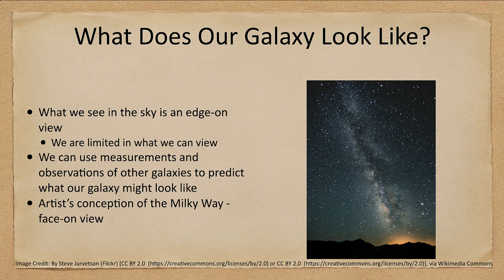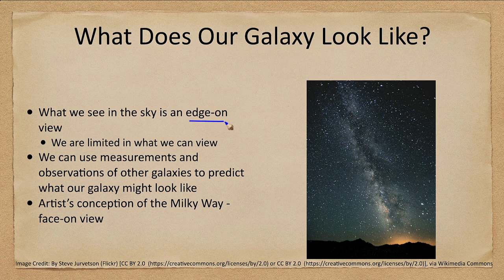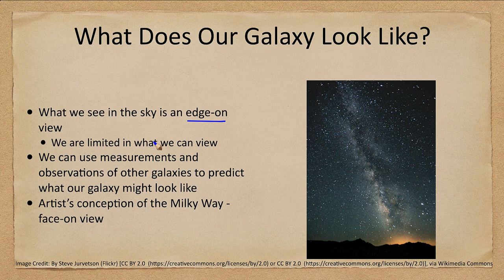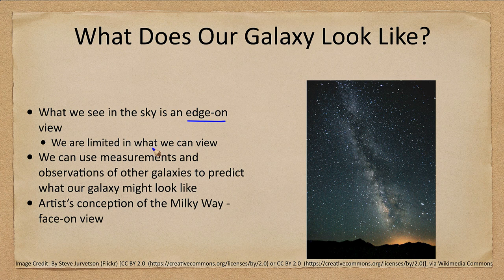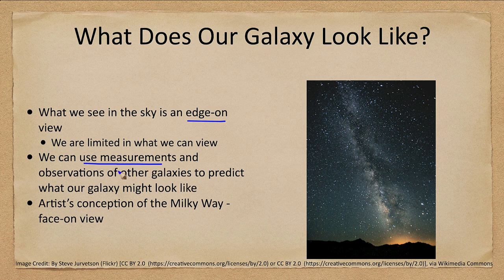Now what does our galaxy look like? Well what we see in the sky is looking at an edge-on view of the galaxy because we are limited in what we can see. If we look at other spiral galaxies as we will in the future, our galaxy looks like one of those that we see edge-on. We're looking at the flattened disk portion. We do not look down and see the great spiral arms. However we can use measurements and observations of other galaxies to predict what our galaxy might look like.